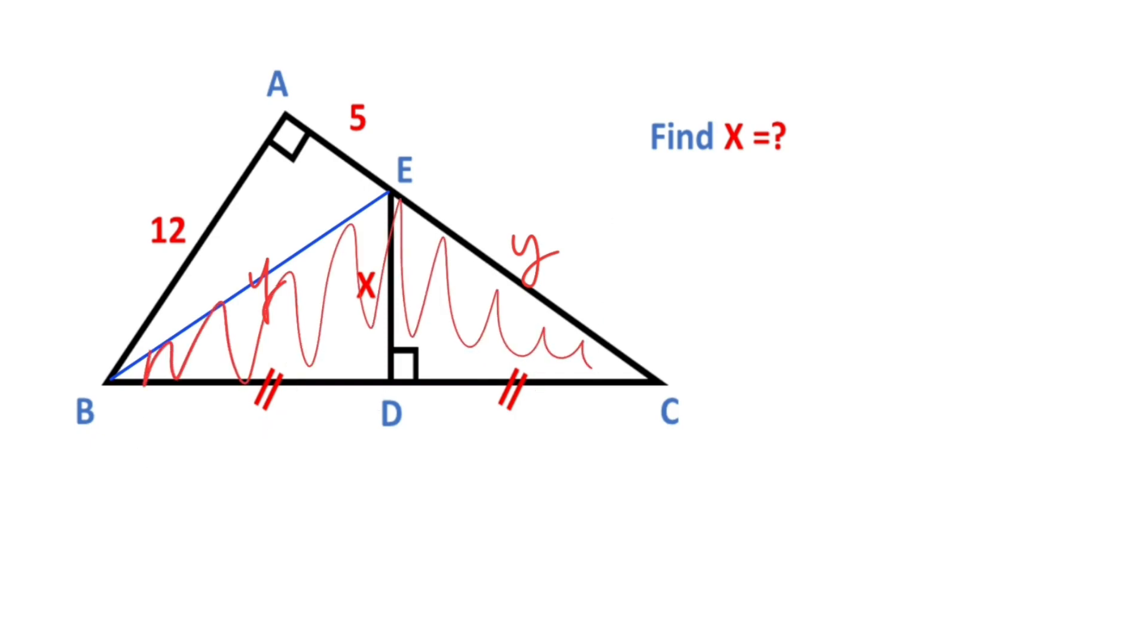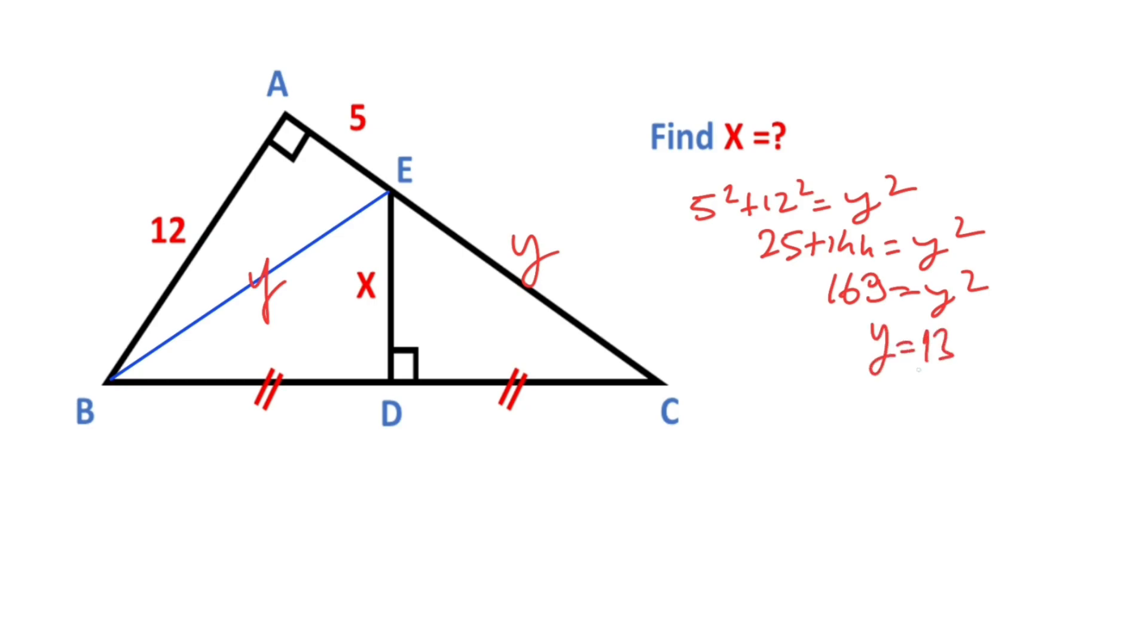That means this triangle is an isosceles triangle. Let's apply Pythagorean theorem for this triangle. 5 squared plus 12 squared equals y squared. So 25 plus 144 equals y squared. 169 equals y squared. That means y equals 13 units.